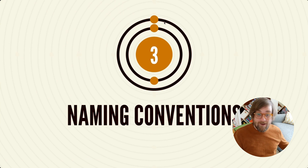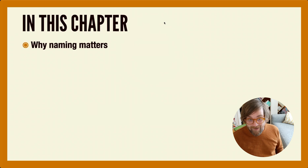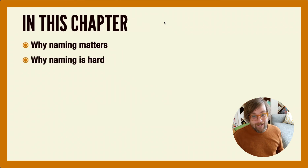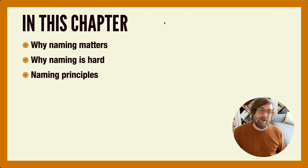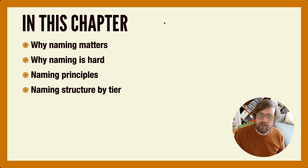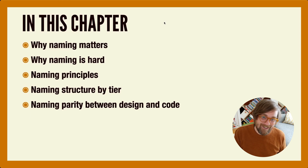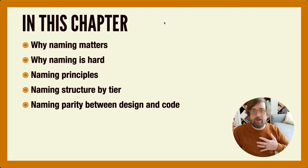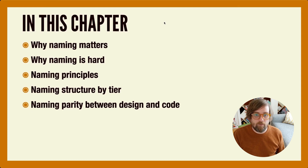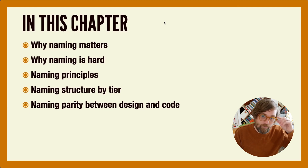Chapter three is about naming conventions. We're going to talk about why naming matters for a design token system and why naming is hard. We'll cover different principles to consider while establishing your nomenclature, the naming structures for all the different tiers, and parity between design and code — which is important and also hard to accomplish. We have a FigJam with a really detailed nomenclature diagram that we're sharing with our pre-order customers.